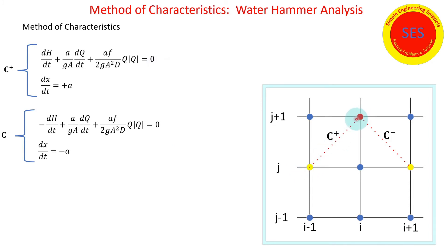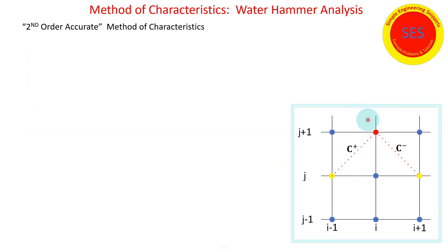In junction by solving these two sets of equations, one set of equations the C plus equation is valid along the C plus characteristics, the set of the C minus equations is valid along the C minus characteristics. We solve those together to find the head and flow at in this case node i time level j plus one. We march through time in that manner. It's a second order accurate method.